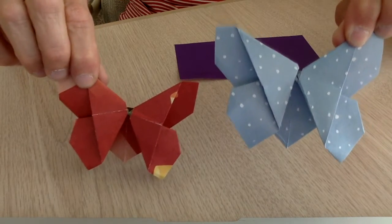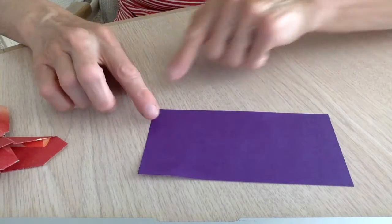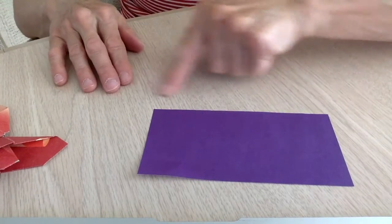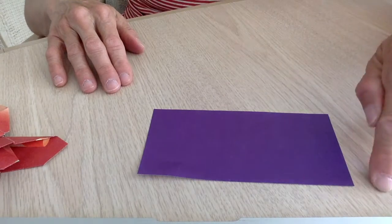To make an origami butterfly, you need a rectangular sheet of paper where the length is twice the width. Mine is 6 inches by 3 inches.